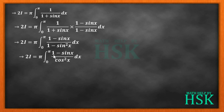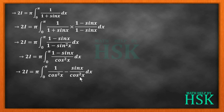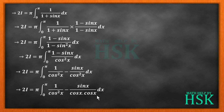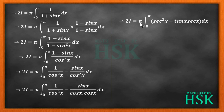I now divide (1−sin x)/cos²x separately: 1/cos²x gives sec²x, and sin x/cos²x = (sin x/cos x)·(1/cos x) = tan x · sec x. So the integral becomes 2I = π · ∫₀^π (sec²x − tan x · sec x) dx.